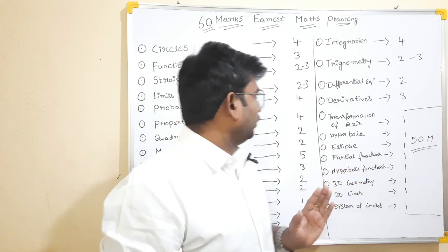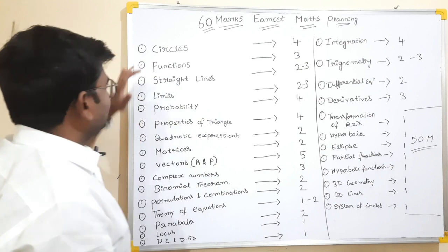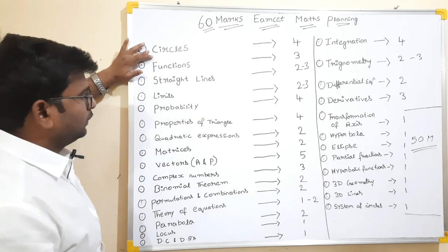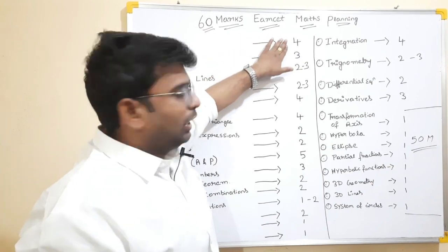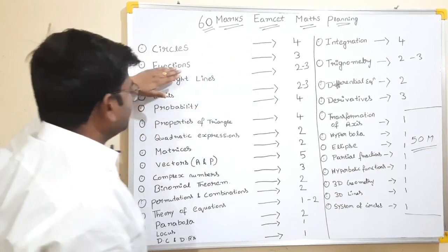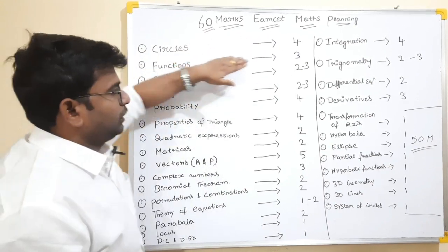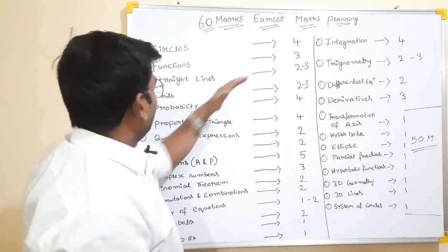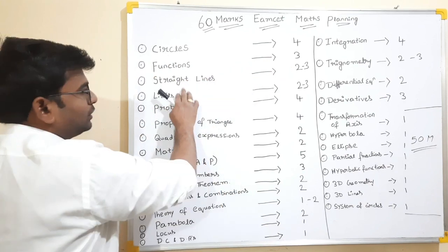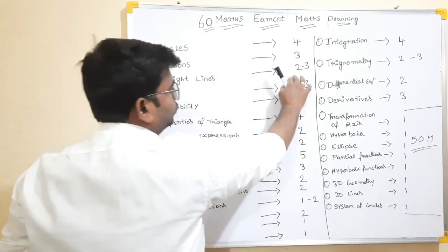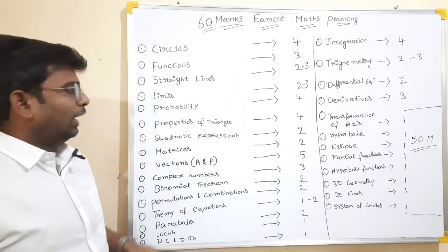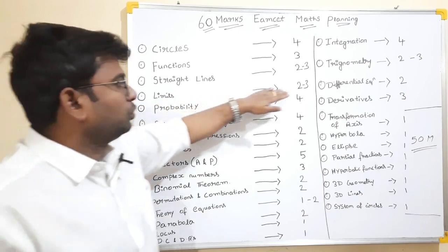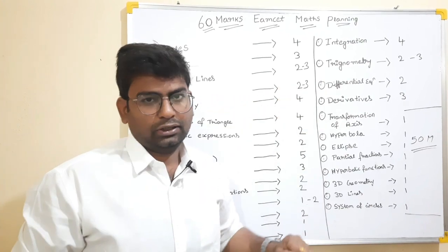How are you? And circles — 4 marks. And functions, they say 3 equations. And straight lines, they say 2 to 3 questions. And limits are 2 to 3 questions.